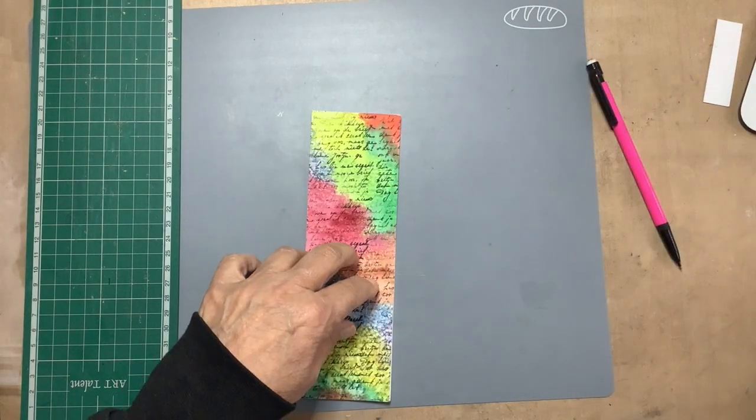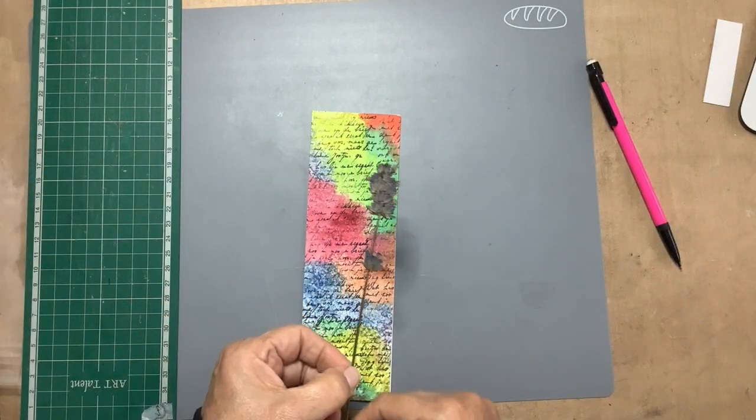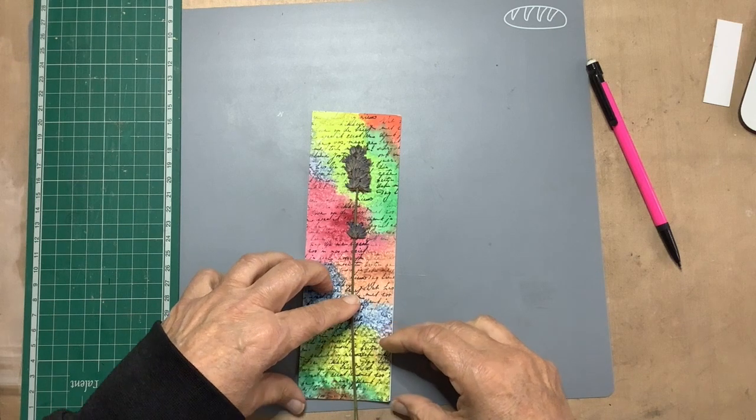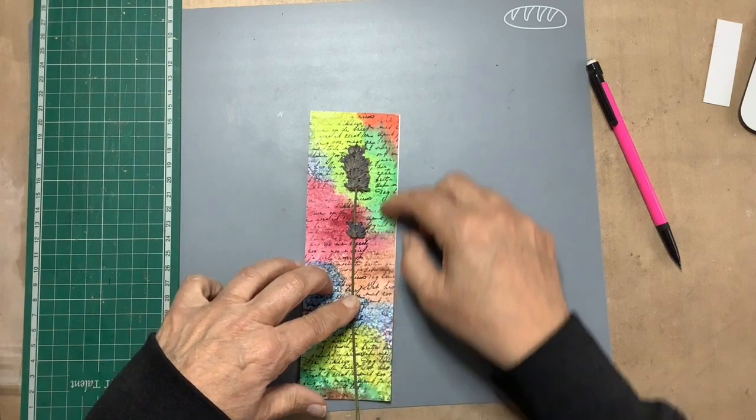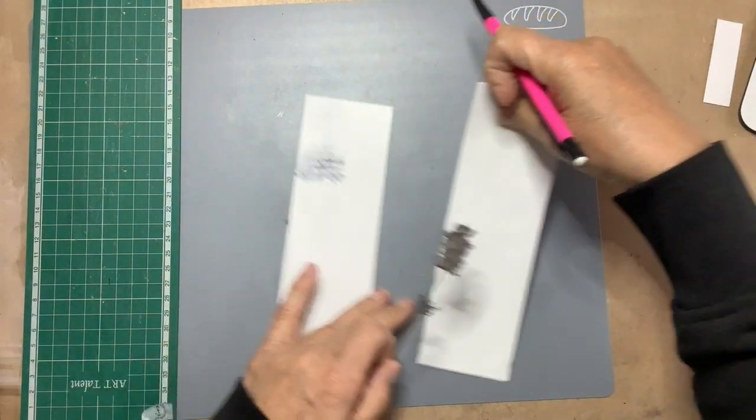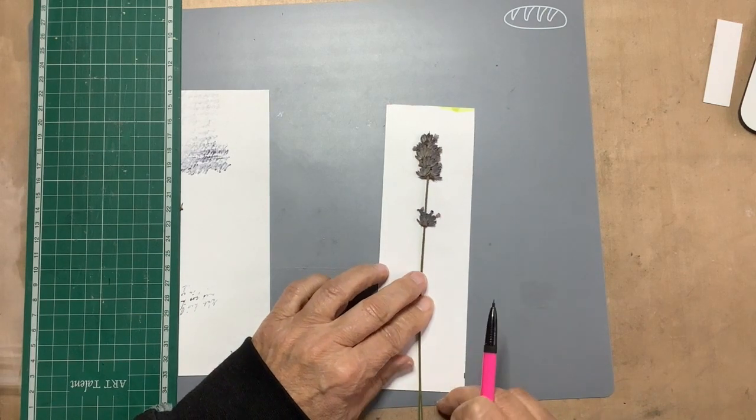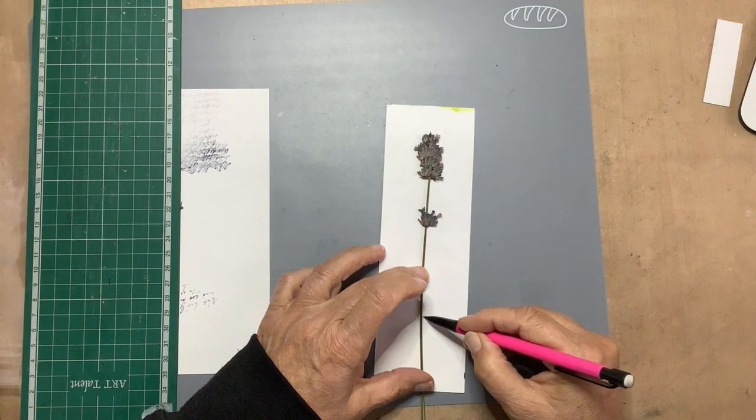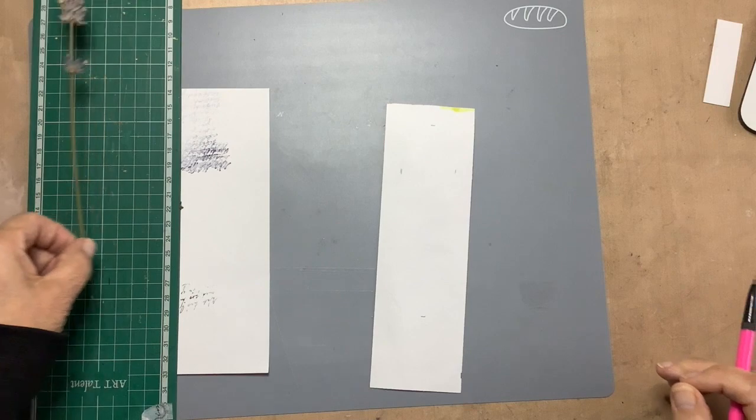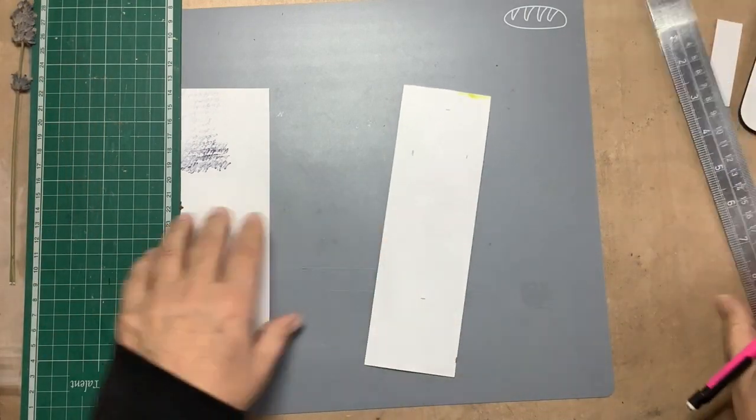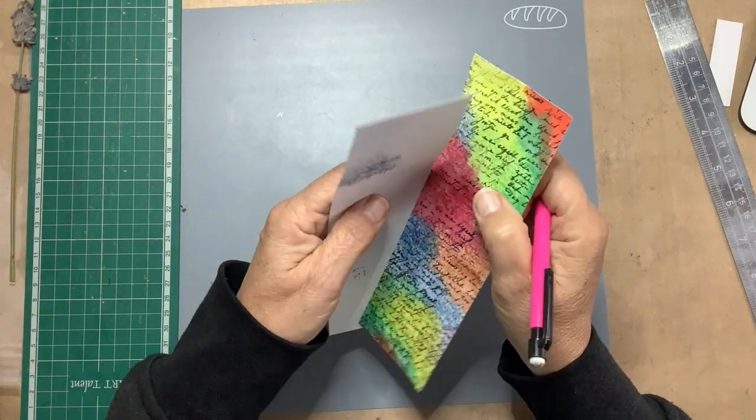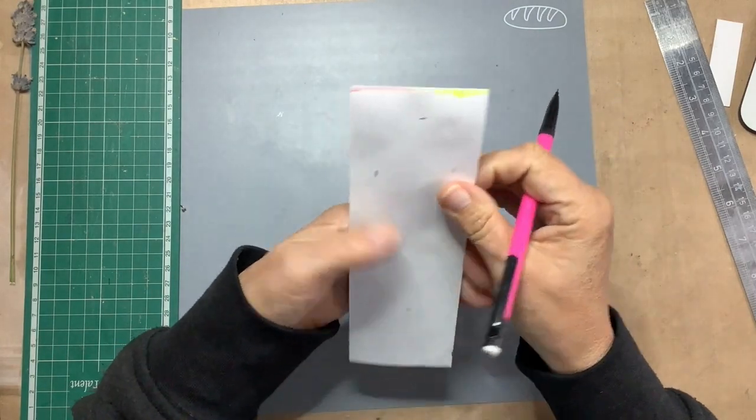This is going to be the belly band. It's a bit smaller than the page length. In this case, it's nineteen and a half centimeters, seven and a half inch. Something like that. And the window should be, where is my lavender? Here it is. I'm going to make it a bit shorter.